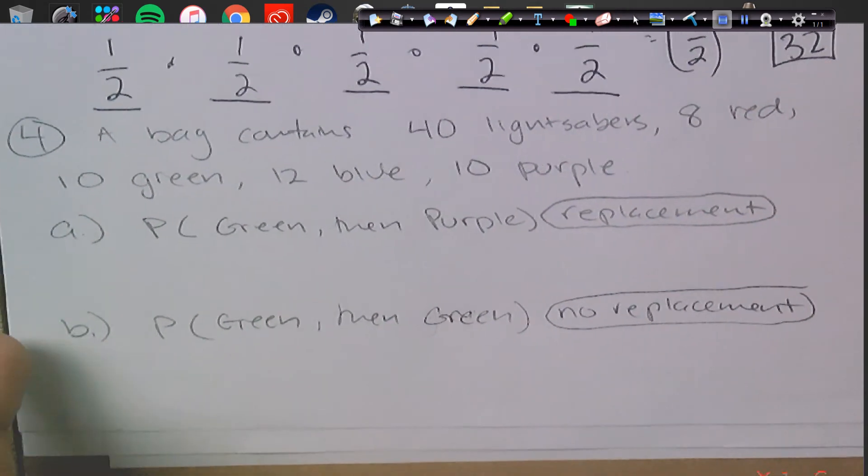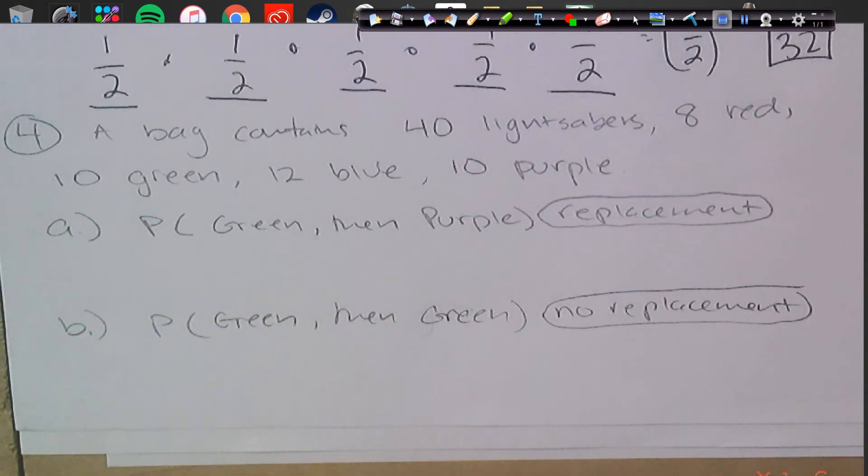Alright, 4 is 2 parts, and this is our last question, so nice, easy video today. Hopefully you're pausing it, trying yourself out. A bag contains 40 lightsabers, 8 are red, 10 are green, 12 are blue, and 10 are purple. And let's try A. Probability I get a green, then a purple, with replacement.